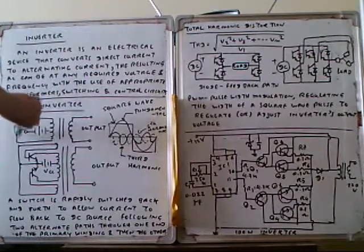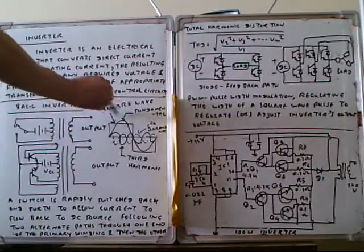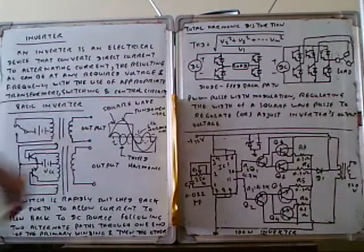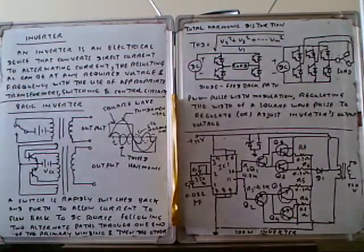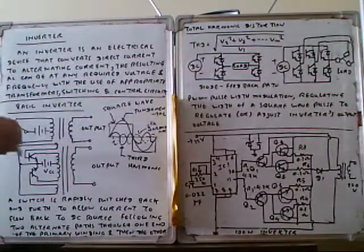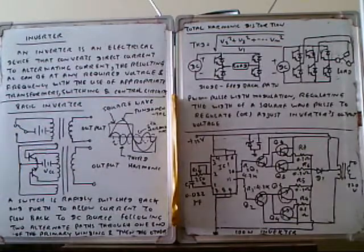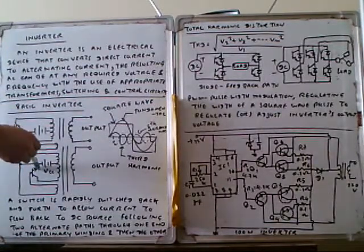So this is the switching. When you switch this one, this output is positive, and switch this direction, output is negative. This is manual switching. This manual switching can be done by transistor switching. Instead of manual switching, we use transistor switching.